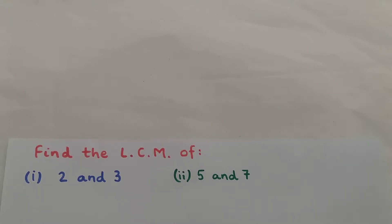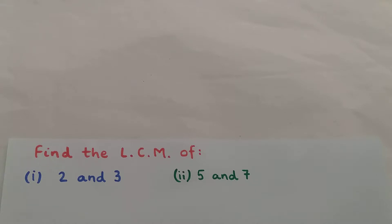Welcome. Here I am going to solve two questions. The first question is: find the lowest common multiple, or LCM, of 2 and 3. And the next question is: find the LCM of 5 and 7. So first I am going to find the lowest common multiple of 2 and 3.